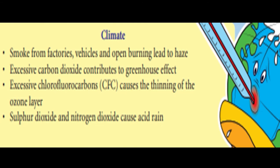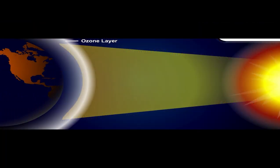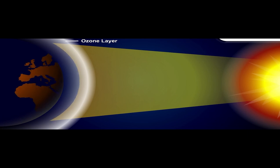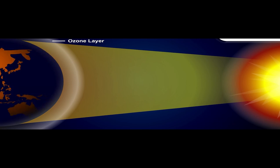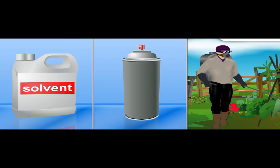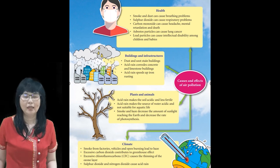Besides the greenhouse effect, excessive chlorofluorocarbons or CFCs cause the thinning of the ozone layer. The ozone layer is important in maintaining the atmosphere and protecting life on earth from harmful ultraviolet or UV rays of the sun. Air pollution due to CFCs released by our activities causes the depletion of the ozone layer, allowing more harmful UV rays to reach the earth.